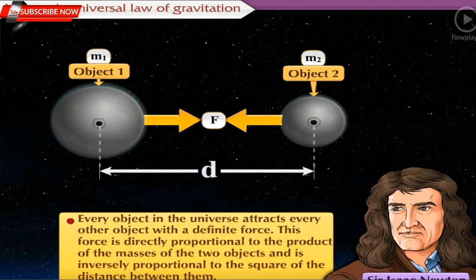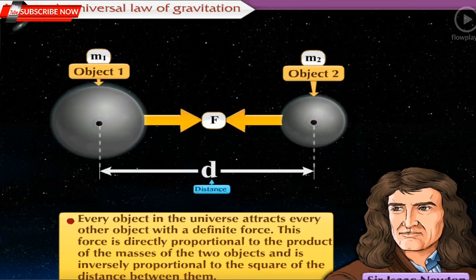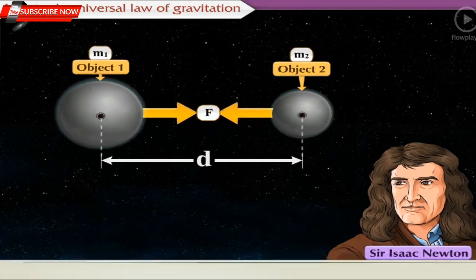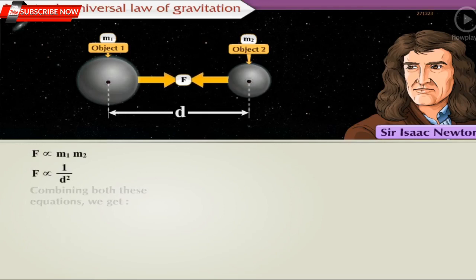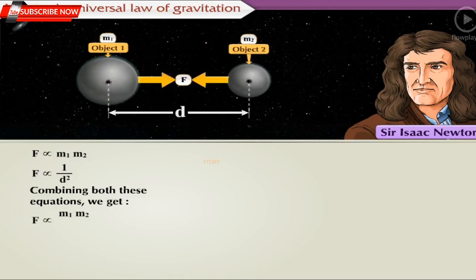Here, two objects with masses M1 and M2 are shown. The distance between these objects is D. The gravitational force of attraction between these two objects is given by: F is directly proportional to the product of M1 and M2. Similarly, F is inversely proportional to D-square. Combining both these equations, we get F is proportional to M1 into M2 upon D-square, and F is equal to G into M1 into M2 upon D-square.